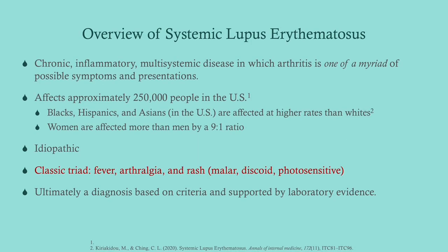Just an overview of lupus: this is a chronic inflammatory multi-systemic disease in which arthritis is one of a myriad of possible symptoms and presentations. A patient coming in with just arthritis — even if it's small joint arthritis, even if it's inflammatory — if they have no other symptoms, it's not lupus. They need to have other symptoms. It affects approximately a quarter million people in the US and growing. People of color tend to be affected at higher rates than whites, and women are absolutely more affected than men by about a nine to one ratio.